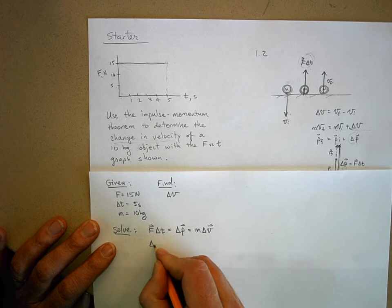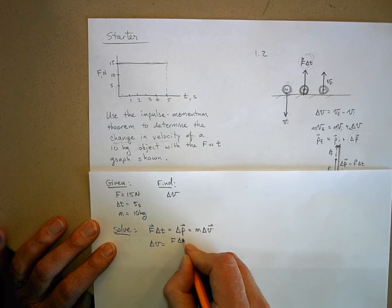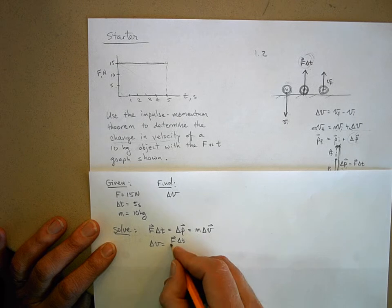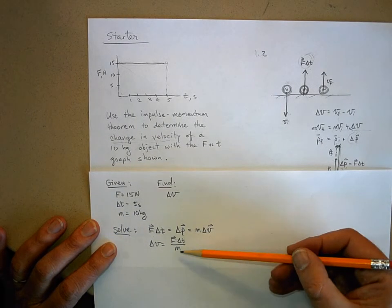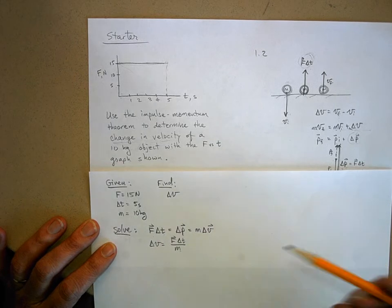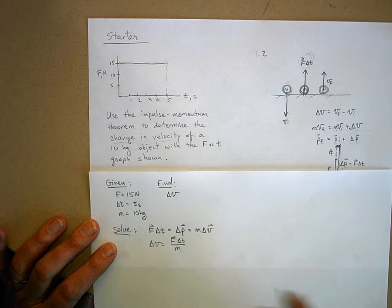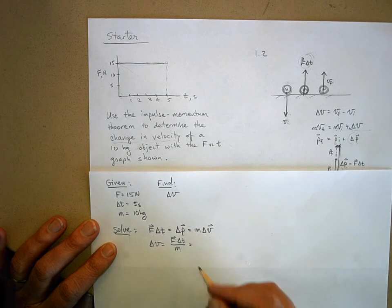So delta V is equal to force times time divided by mass. And notice that force divided by mass, that's really the acceleration, isn't it? And acceleration times a change in time is a change in velocity. So we're really not doing anything that we didn't do before. Just expressing it a little bit differently.